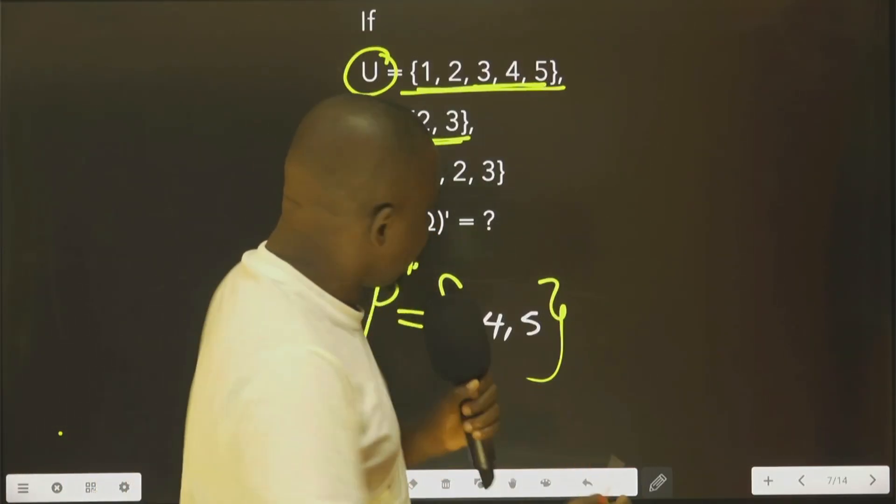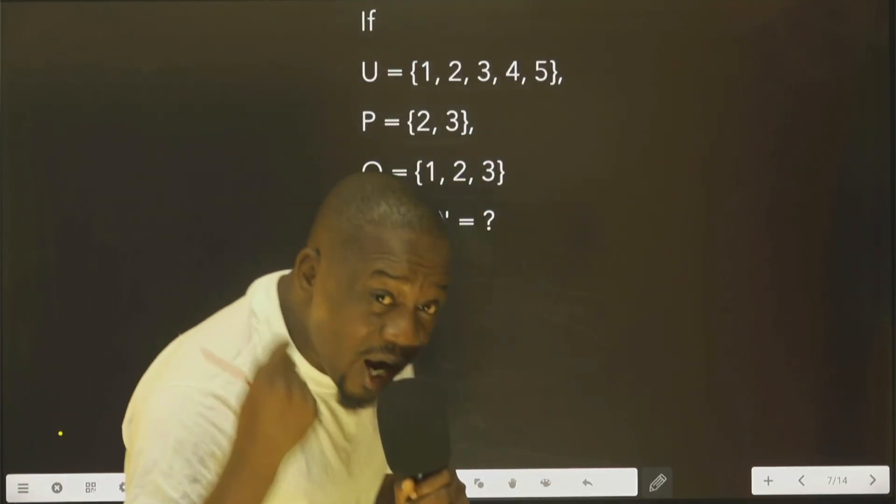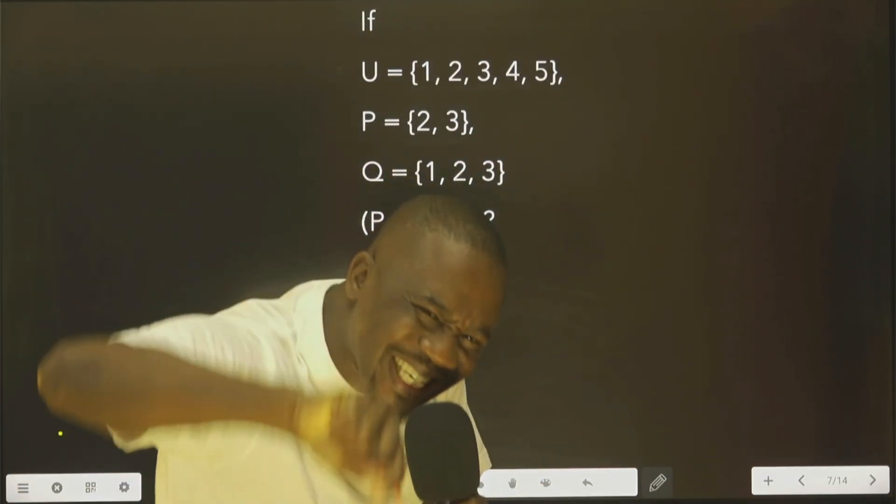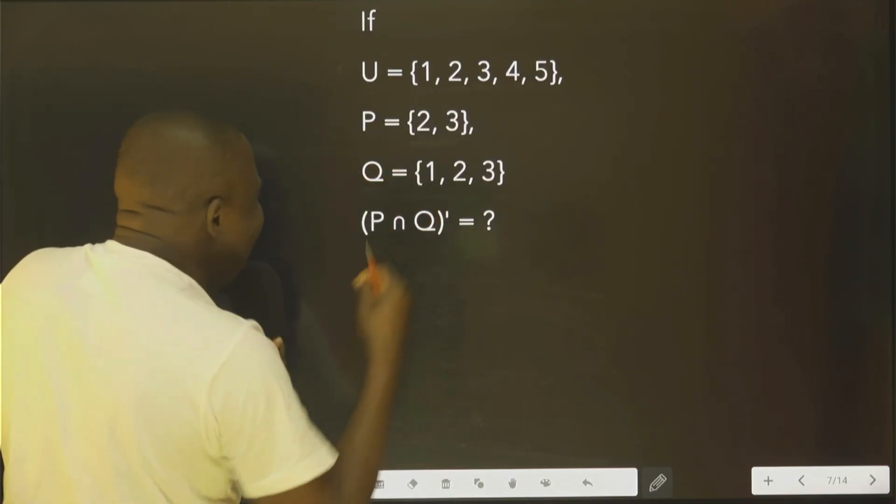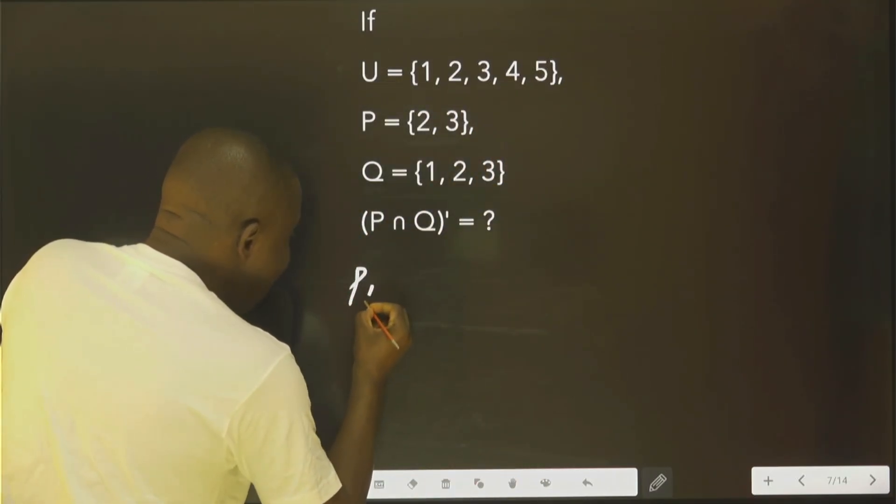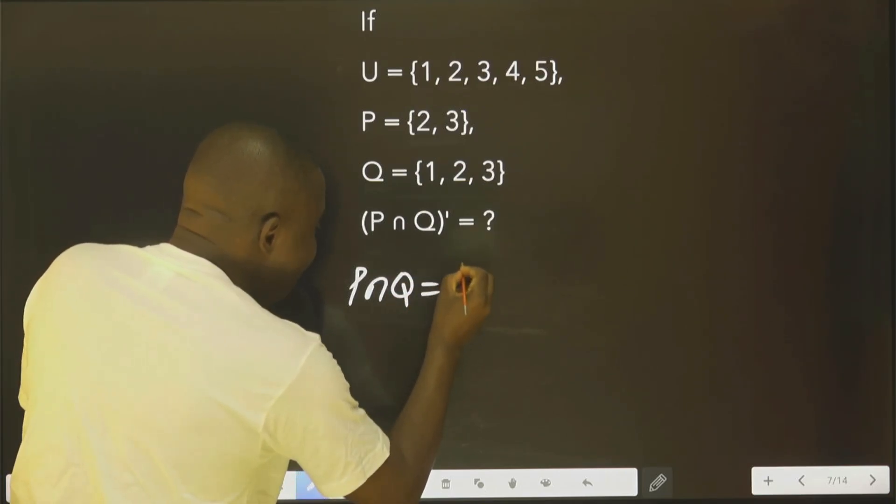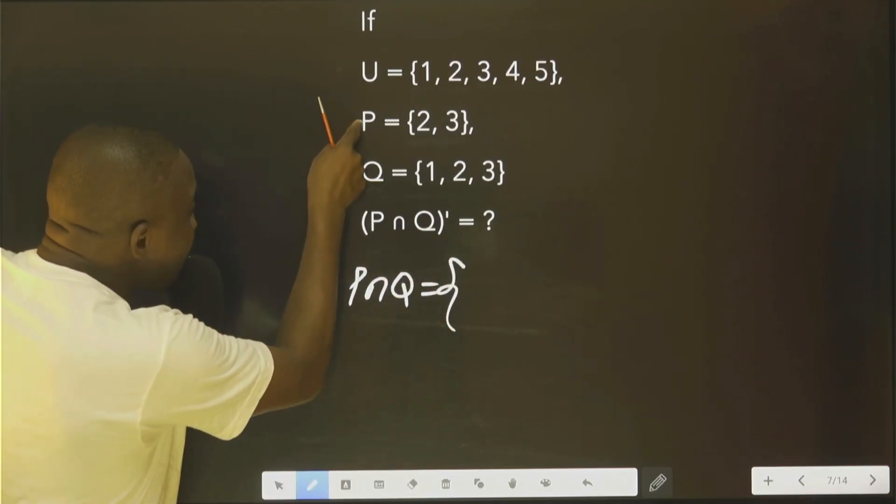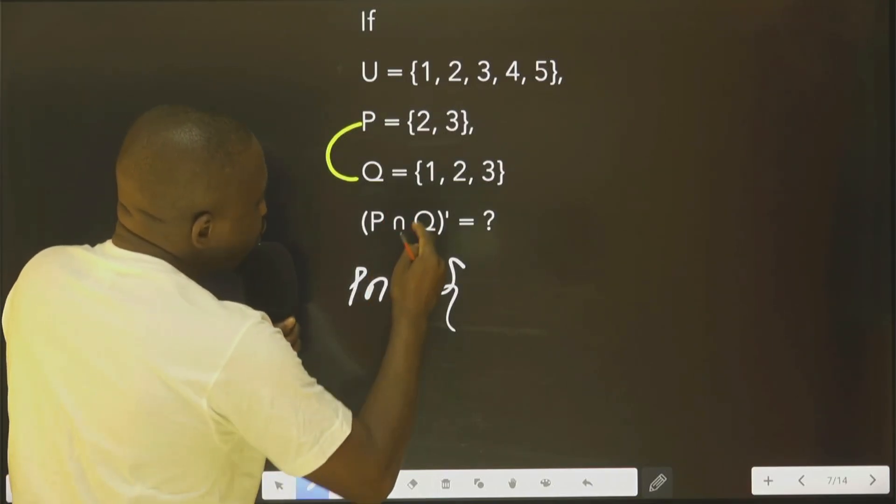that is not the question. The question says, what is the complement of the intersection of P and Q? So now let's find P intersect Q. That is, what is in P that is also in Q? As you can